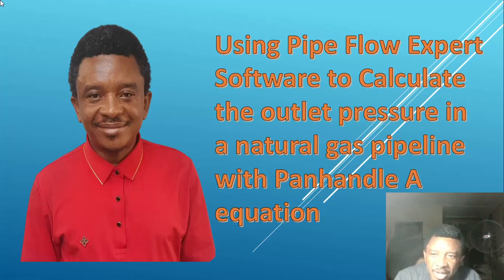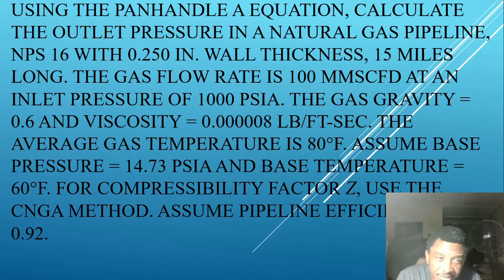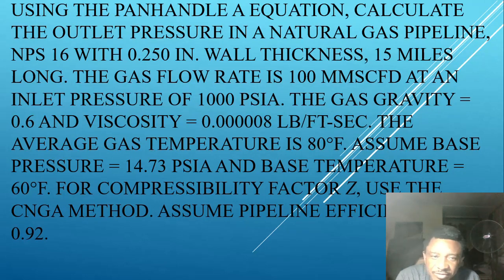This video is all about using Pipe Flow Expert software to calculate the outlet pressure in a natural gas pipeline with the Panhandle A equation. This is a problem using the Panhandle A equation: calculate the outlet pressure in a natural gas pipeline. The nominal size of the pipeline is 16 inches with 0.250 inch wall thickness, 15 miles long.